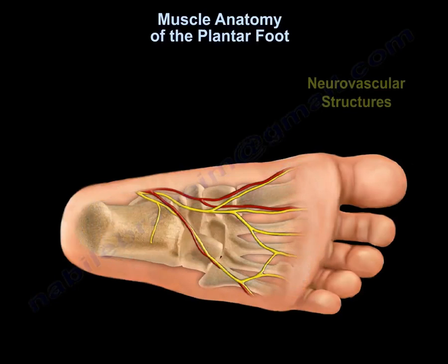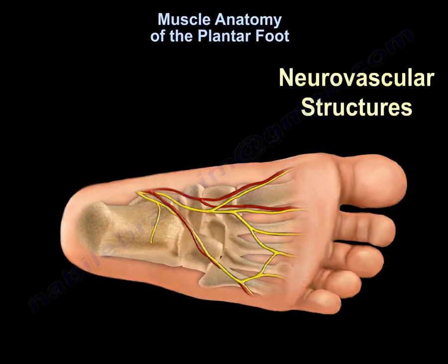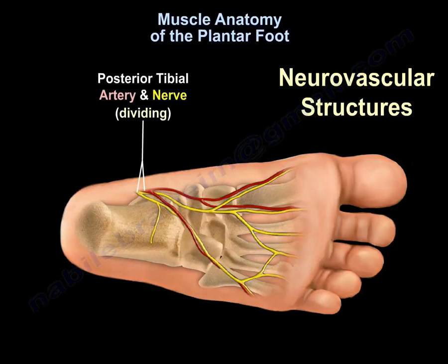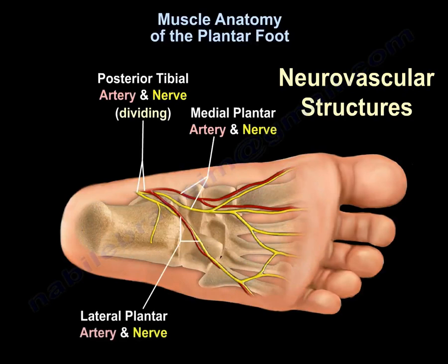Here you can also see the neurovascular structures: the posterior tibial artery and nerve, dividing into the medial plantar artery and nerve, and the lateral plantar artery and nerve.